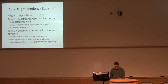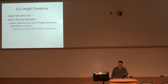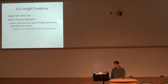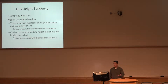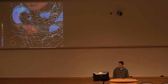That's the QG height tendency equation. You're looking for maxima in thermal advection in the column if you're looking for height falls or height rises, and you're looking for cyclonic or anticyclonic vorticity advection. And when we get to the omega equation, it's literally just flipped around — thermal advection and differential vorticity advection. That's really the main thing to remember.